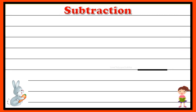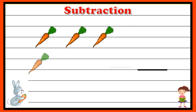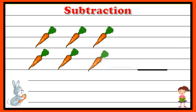Now let's take another example to understand subtraction. Here we have one, two, three, four, five, six — so totally we have six carrots. The bunny takes four of the carrots, so we write it as minus four.